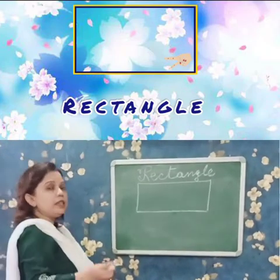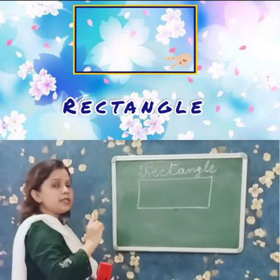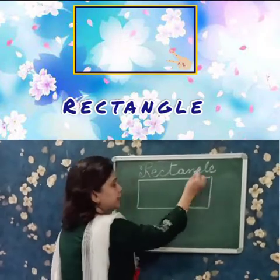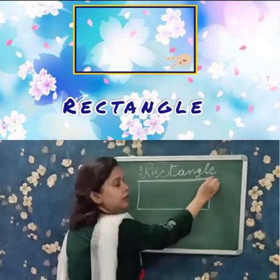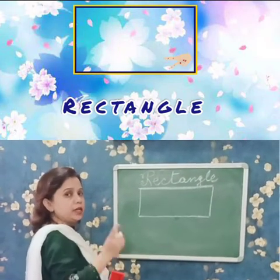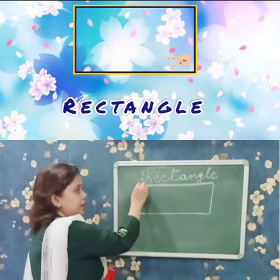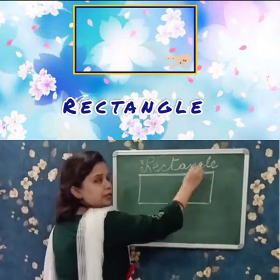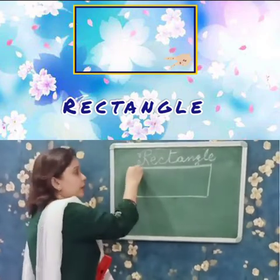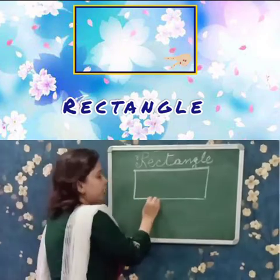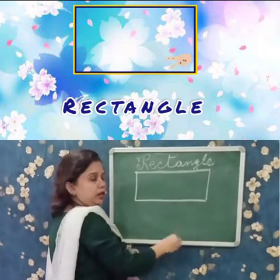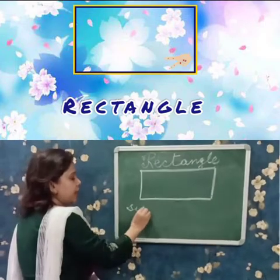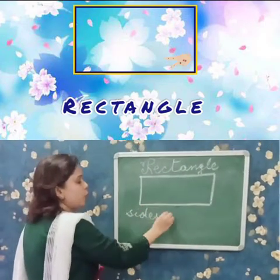Now in this rectangle, how many sides can you see? This is one side. Sides are the line segments — you have learnt a line segment, with a starting point and an ending point, with two end points. Another side — two. Then another side — three. And another side — four. So it has four sides, or you can say four edges.